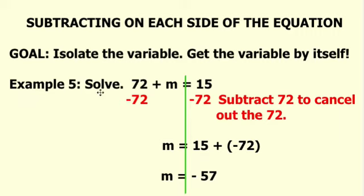So here we have solve, and the equation is 72 plus m is equal to 15. So in order to isolate the variable m, you must use inverse operations.